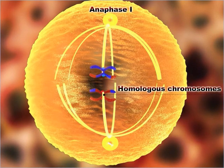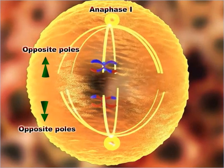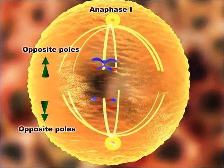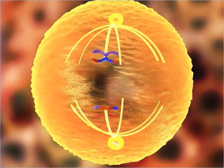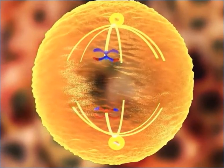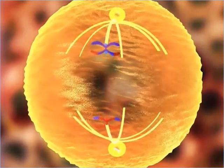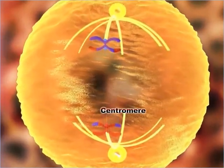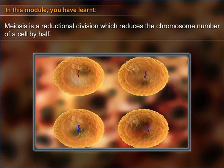Metaphase one is followed by anaphase one. During anaphase one, the homologous chromosomes separate and move to opposite poles with shortening of the microtubules. The sister chromatids, on the contrary, remain attached at the centromere.